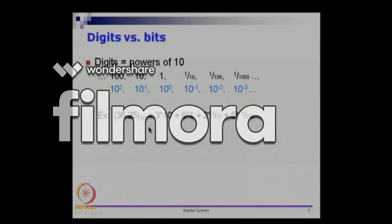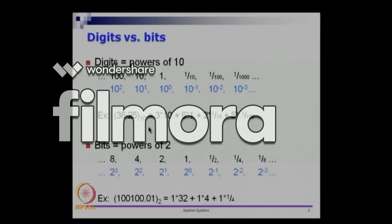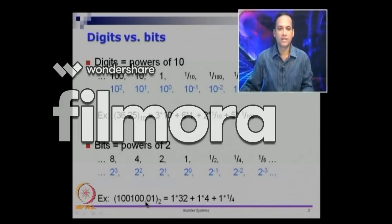That is a positional weight system and this automatically extends to binary also. In binary, if you see a dot given in a binary number, you start from the left side assigning weights 2 power 0, 2 power 1 and so on to the left, and start with 2 power minus 1, 2 power minus 2 and so on to the right. From one side it is actually only increasing from left to right.